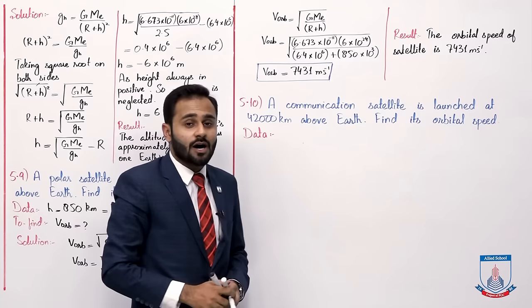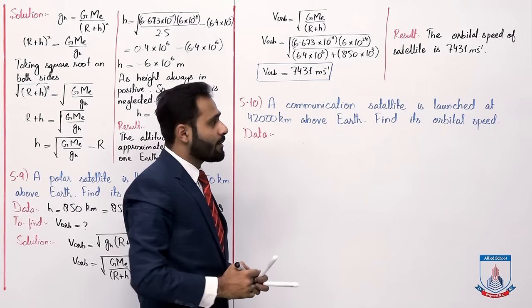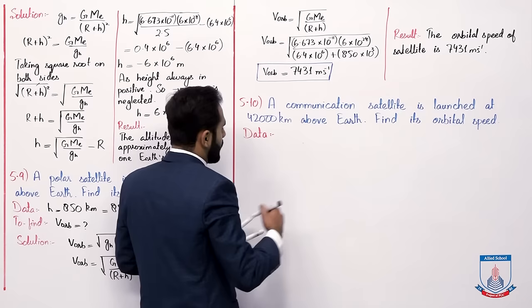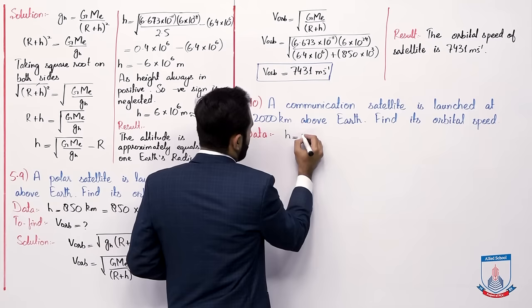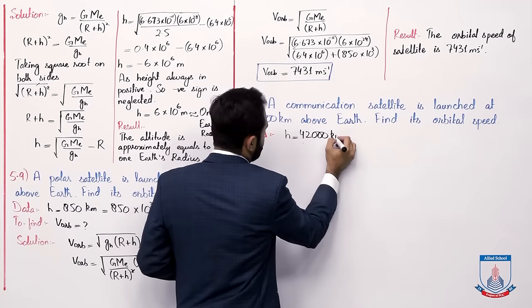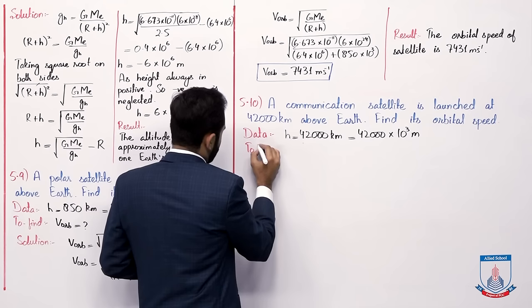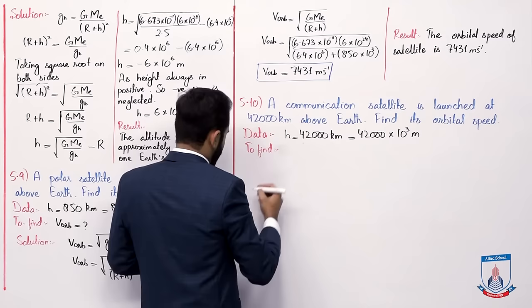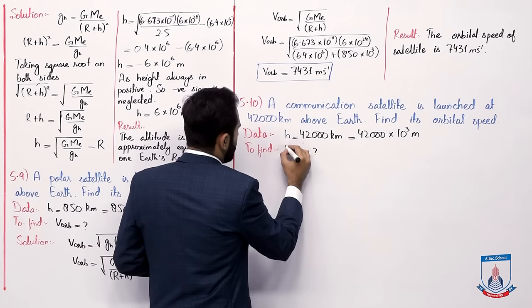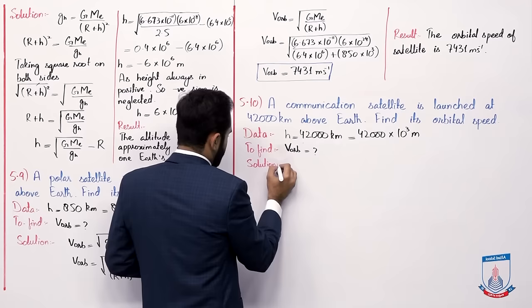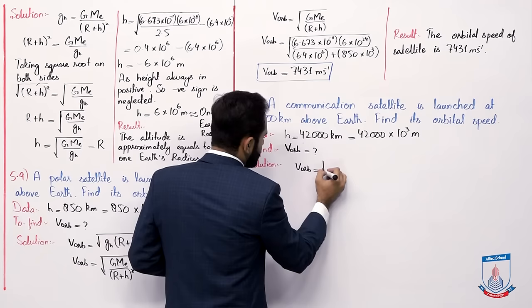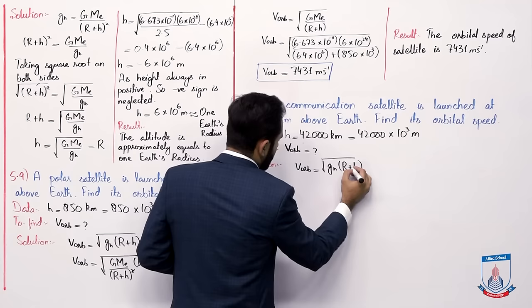Now last numerical: a communication satellite is launched at 42,000 kilometer above Earth — find its orbital speed. The height given is 42,000 kilometer. Converting to meters: 42,000 multiplied by 10 to the power 3 meters. We have to find v_orbital. Write the solution: v_orbital formula is under root of (g_h times (r plus h)).